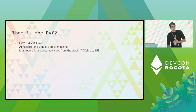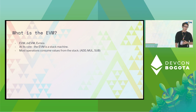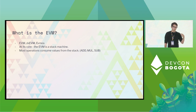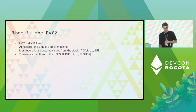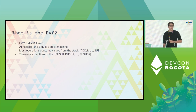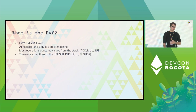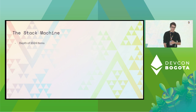Most of the operations consume values from the stack. For example, ADD takes two values from the stack, adds them, and you're left with one value. MULTIPLY takes two values from the stack and you're left with one value, et cetera. But there are exceptions — the most notable one is PUSH. We have PUSH1 through PUSH32, which pushes between one and 32 bytes onto the stack respectively.